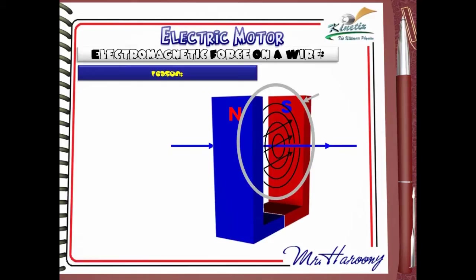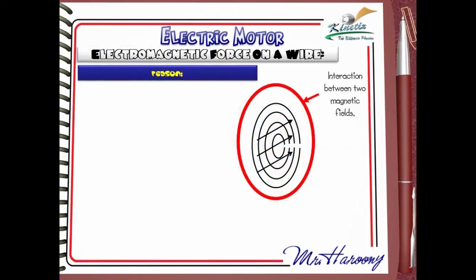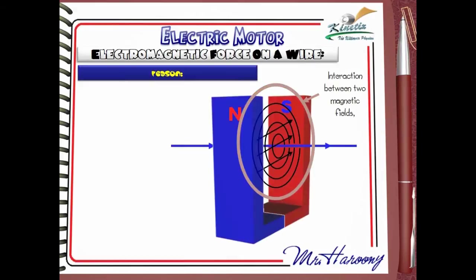Now look at this region — there is an overlap between two magnetic fields, just as if there were two magnets. This overlap will cause an interaction between the two magnetic fields, and that interaction causes a force on the wire.